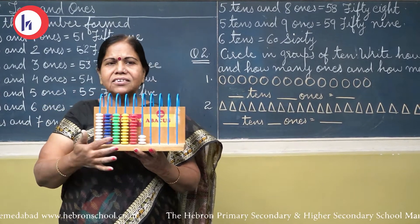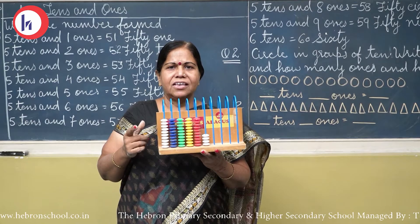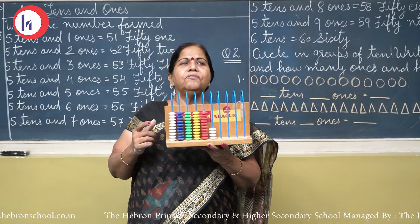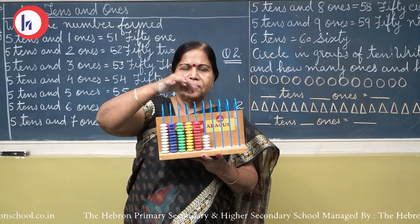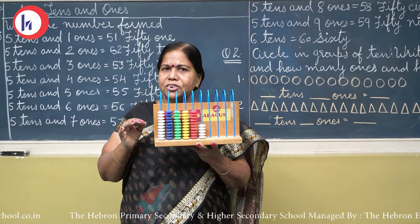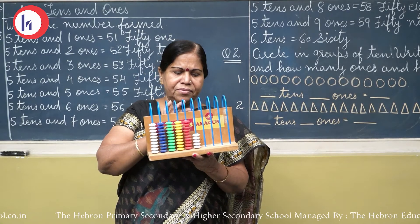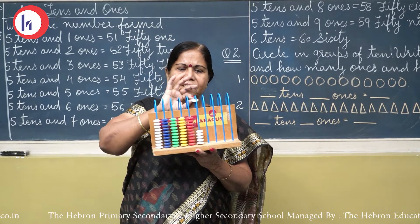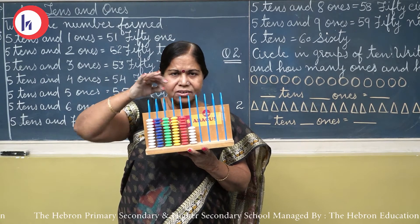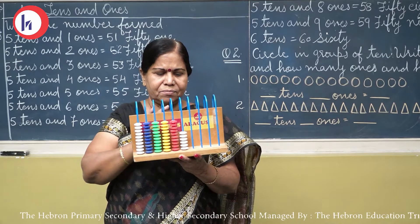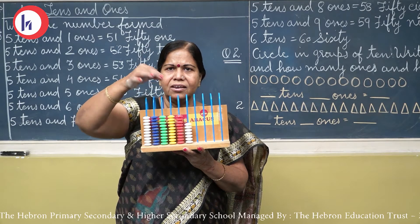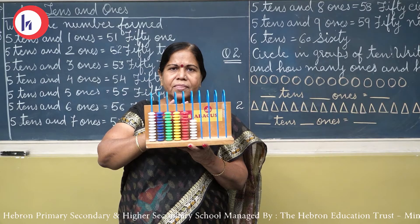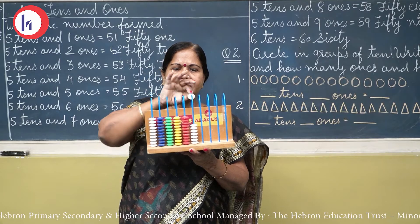How many beads are there of white color? Yes, 10. Now how many blue colors? Again 10. So 10 and 10, how many? 20. Now green color: 10. So 10, 20 and 30. Now yellow color: 10. Now how many 10s are there? 1, 2, 3, 4. And 4 tens means 40.